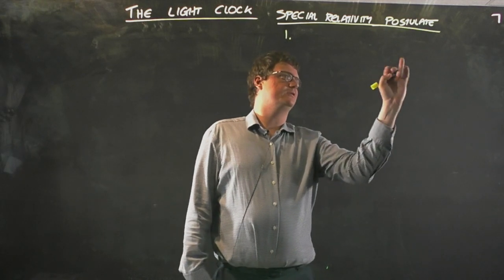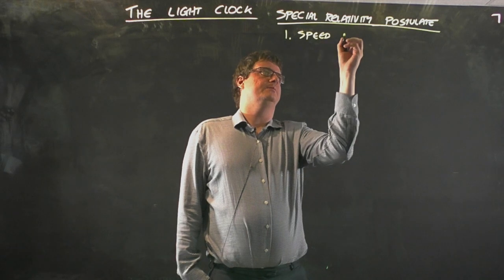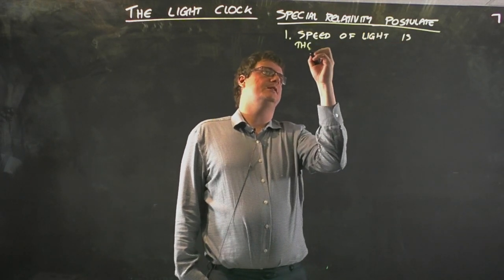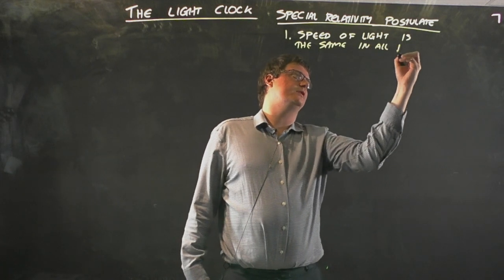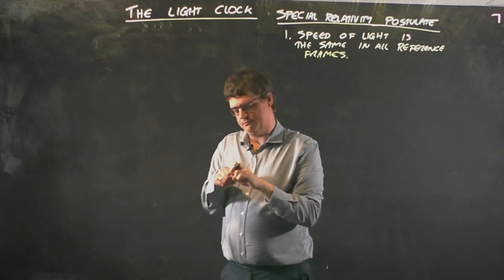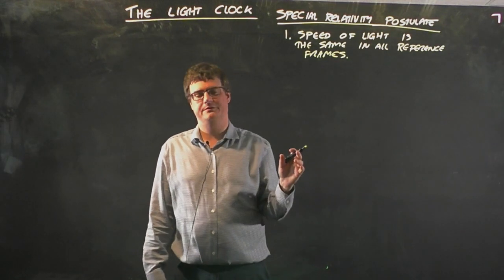The first postulate of special relativity is that the speed of light in a vacuum is the same in all reference frames. That's kind of a weird thing just to assume, but we've got data to back this up. It actually does happen, the speed of light being the same in all reference frames.